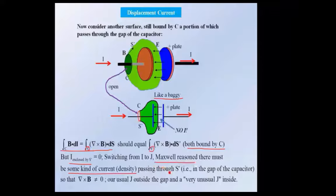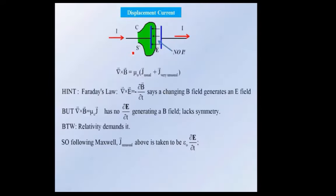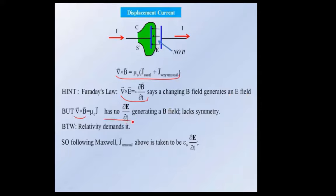To patch things up, there must be some kind of current density passing through S prime. This is where Maxwell reasoned that in the gap of the capacitor there has to be some kind of current, so that this quantity can be different from zero. Our usual current density J remains outside the gap, but we have to come up with a very unusual J inside the gap. Combining the two gives us the relationship between the curl and these current densities. Looking at Faraday's law, the curl of E is generated by the derivative of B with respect to t — a changing B field generates an E field. But in Ampere's law there's no dE/dt term — nothing generating a B field due to a changing E.